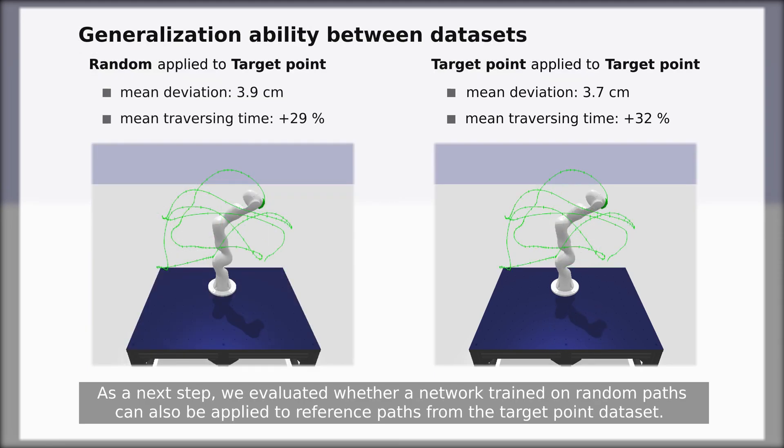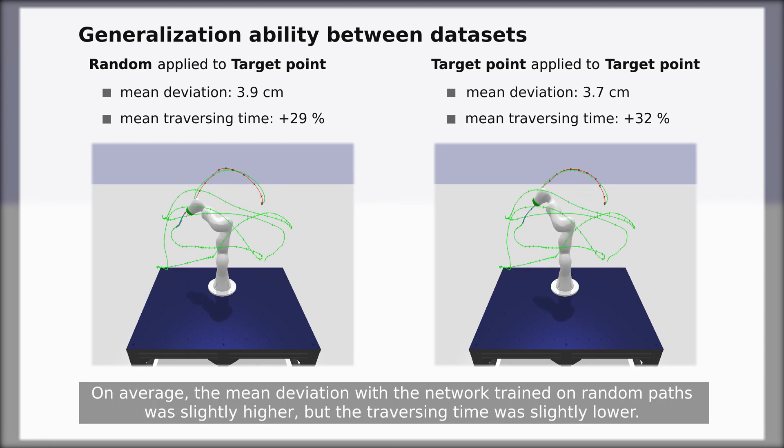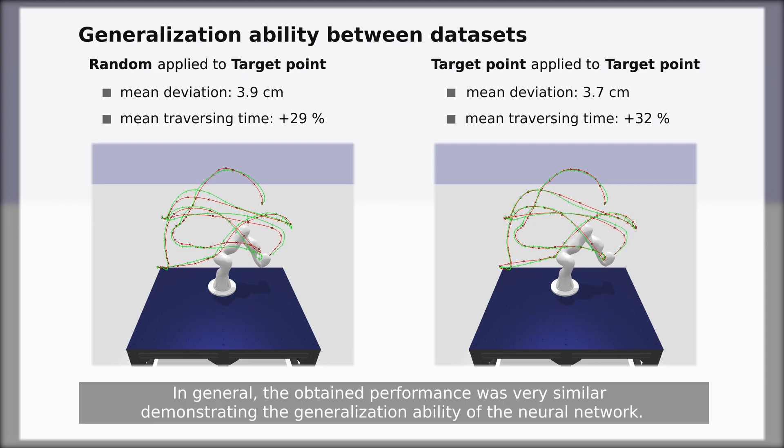As a next step, we evaluated whether a network trained on random paths can also be applied to reference paths from the target-point dataset. On average, the mean deviation with the network trained on random paths was slightly higher, but the traversing time was slightly lower. In general, the obtained performance was very similar, demonstrating the generalization ability of the neural network.